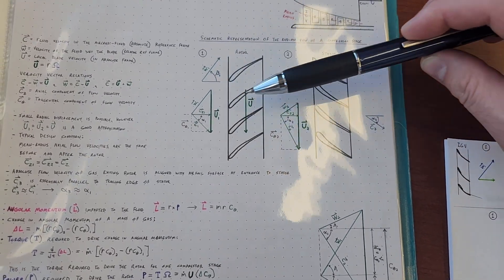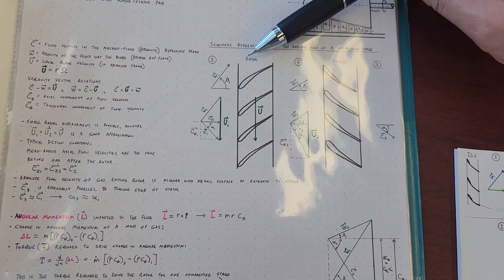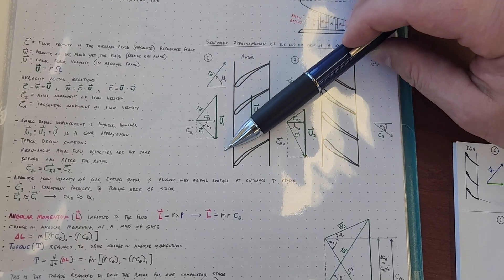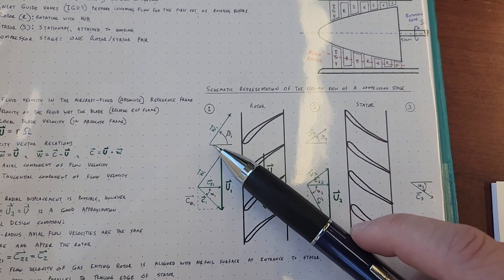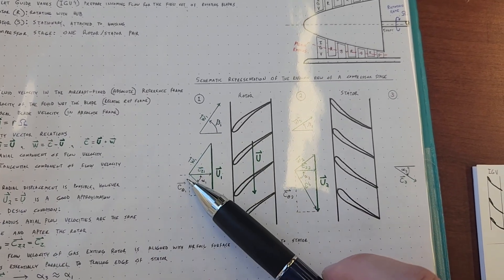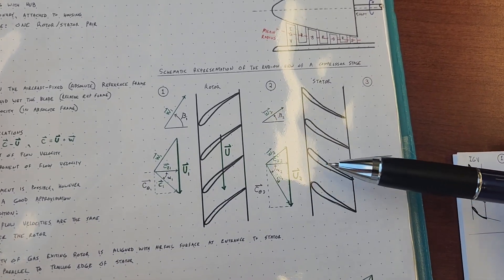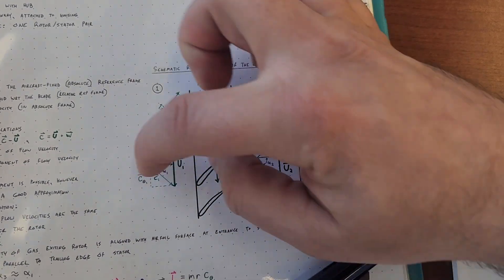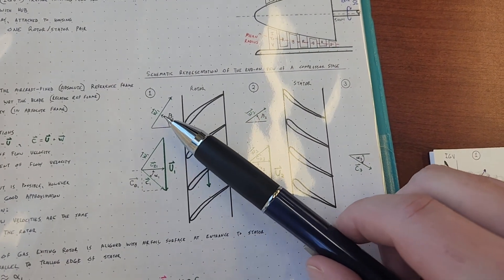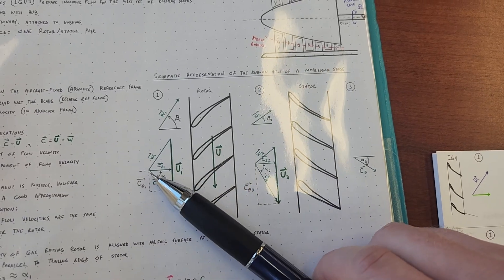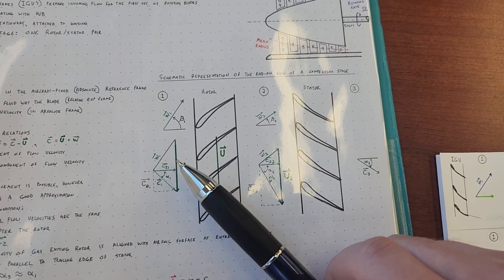The W component is going to be what the blade is experiencing. As the blade's cutting in this direction, from its perspective, the air that it's cutting through is moving in the opposite direction. So W is always going to be pointing from the tail of the axial flow, because you have flow that's always moving through the stage, and each stage is going to be equal — we assume that's constant. So the fluid velocity with respect to the blade is always going to be from the tail of the CZ component to the tail of the U vector.